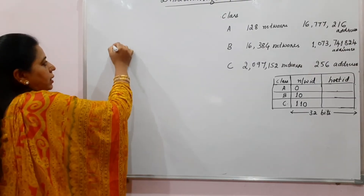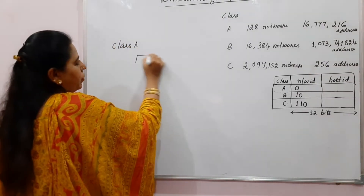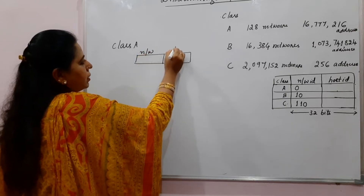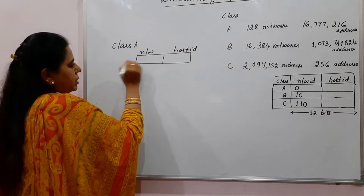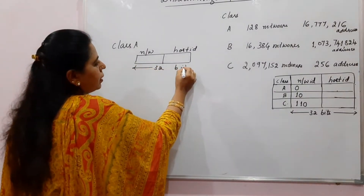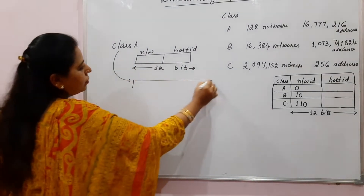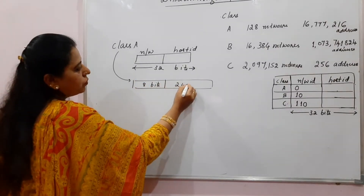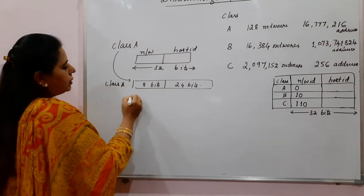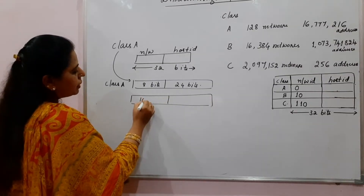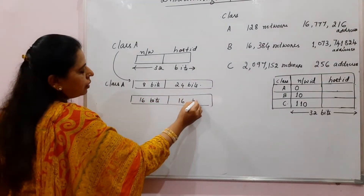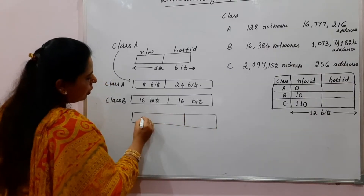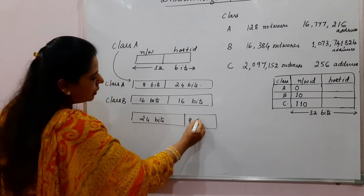Any IPv4 address is basically divided into two sections: one is the network part and another is the host part. The total number of bits used to represent an IPv4 address is 32 bits. In class A addressing, 8 bits are used for the network part and 24 bits for the host part. In class B, 16 bits are used for the network part and 16 bits for the host ID. In class C, 24 bits are used for the network part and 8 bits for the host ID.